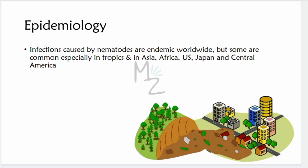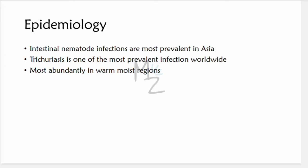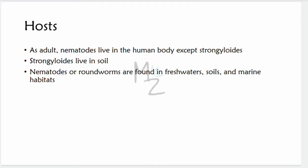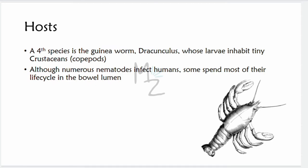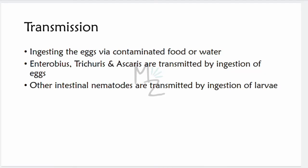Regarding epidemiology: nematode infections are endemic worldwide, but more common in the tropics — Asia, Africa, the US, Japan, and Central America. Intestinal nematode infections are most prevalent in Asia. Trichuriasis is one of the most prevalent infections worldwide, most abundant in warm moist areas. Adult nematodes live in the human body, except Strongyloides stercoralis, which lives in soil. Nematodes are found in freshwater, soils, and marine habitats.